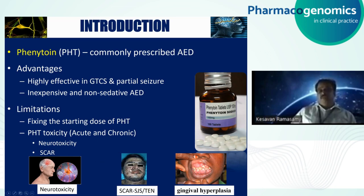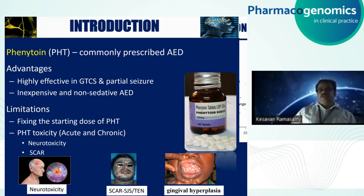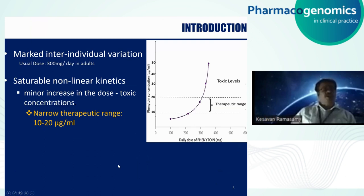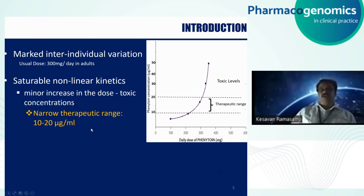Most patients tolerate phenytoin, but a few also develop serious cutaneous adverse reactions. At a given standard dose of phenytoin, there is marked individual variation in plasma phenytoin levels. This drug follows saturable non-linear kinetics, meaning a minor increase in dose can make a patient attain higher toxic concentrations, leading to phenytoin toxicity. Moreover, this drug works within a narrow therapeutic range of 10 to 20 micrograms per ml. There are many factors that can predispose to phenytoin toxicity.